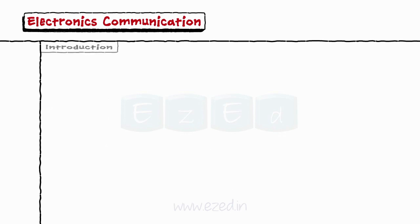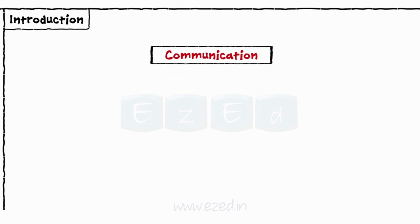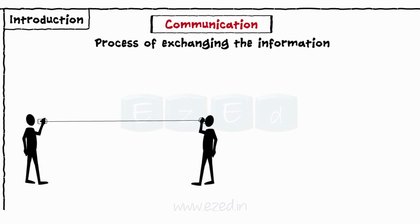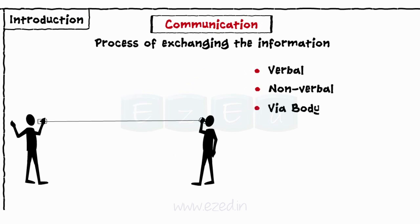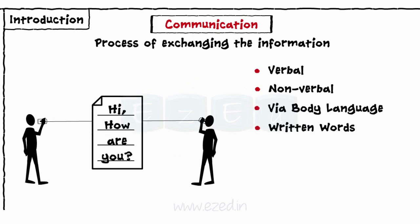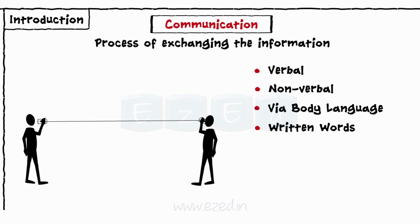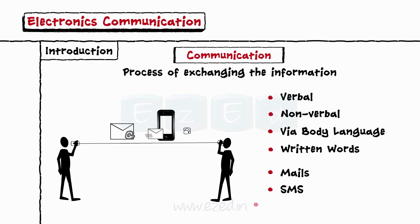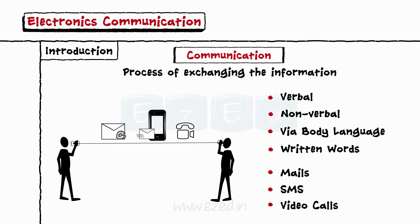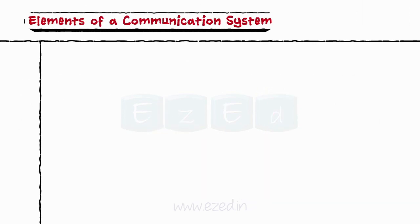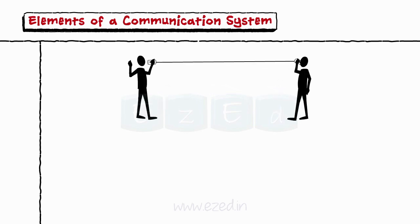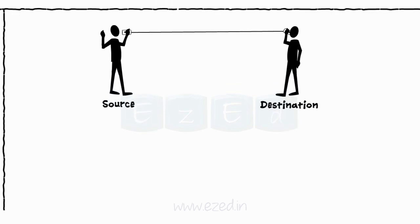We are very well aware about the word communication. It is the process of exchanging information. Communication between two human beings can be verbal, non-verbal, via body language, or written words, etc. Nowadays, we use different modes of communication such as mails, SMS, video calls, etc. Communication always takes place from a source to a destination, and in between them there are various elements present.